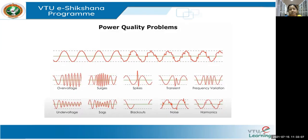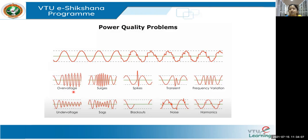From module one: a nominal voltage keeps your system at one per unit and 50 Hz frequency in India. You have to maintain that voltage and frequency — if anything goes above or below, you are not delivering good power quality. Overvoltage is when the voltage goes above your nominal per unit value for a longer period.